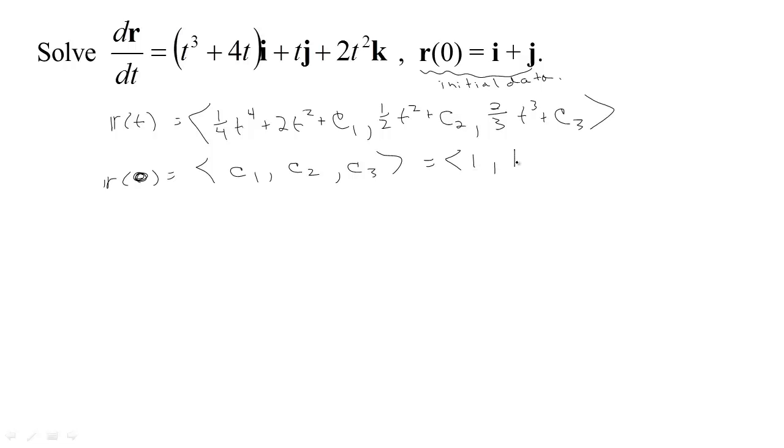But according to what we're told, that's supposed to be equal to 1i, 1j, and 0k, and so we can read off that c1 must be 1, c2 must be 1, and c3 must be 0.